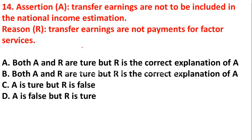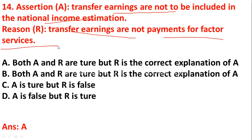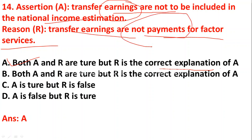Question 14 — Assertion and Reasoning: Assertion is transfer earnings are not to be included in national income estimation. Reason is transfer earnings are not payments for factor services. Both assertion and reason are true, and the reason is the correct explanation of the assertion, because transfer earnings are not included in national income precisely because they are not payments for factor services.